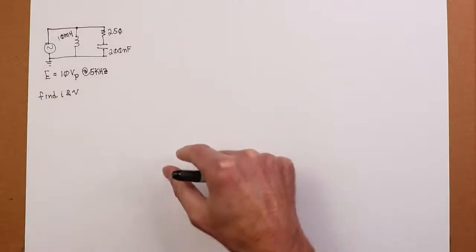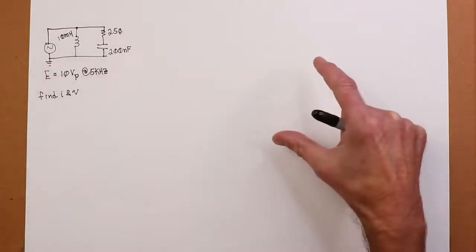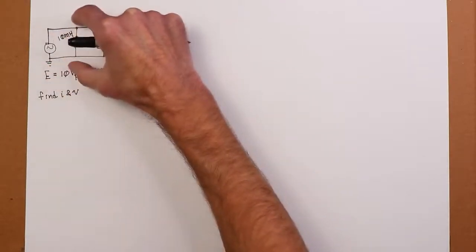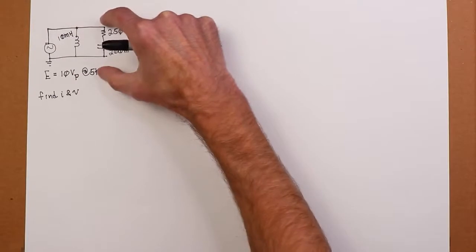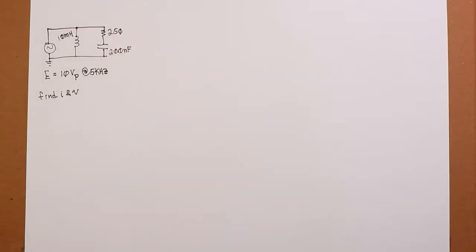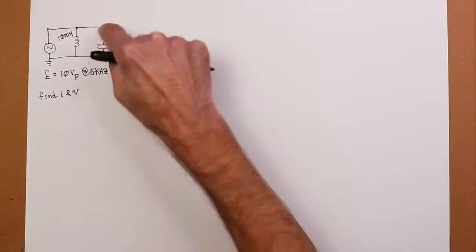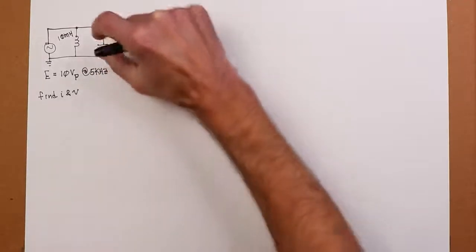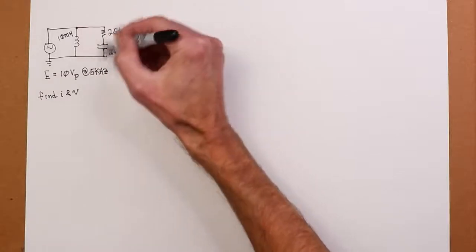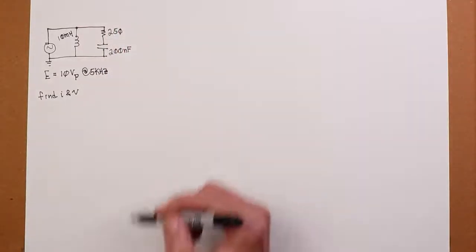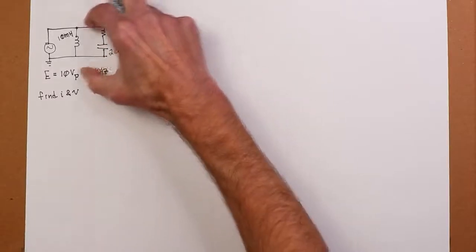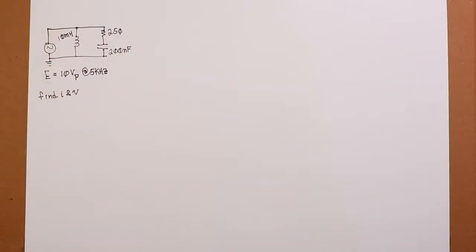We have to apply our series rules and our parallel rules on sub circuits. So what we see here effectively is the inductor in parallel with the series combination of the resistor and capacitor. So basically it's a parallel circuit. So we're going to use the parallel rule that the voltage is the same across all elements in a parallel circuit.